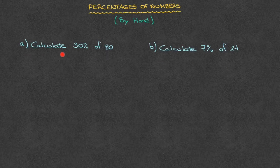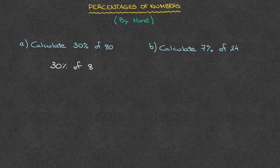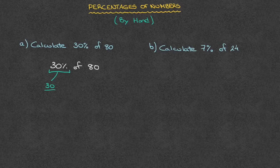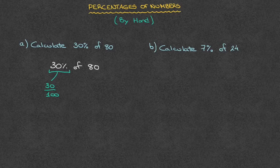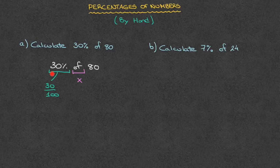First of all, we need to calculate 30% of 80. To calculate 30% of 80, there are two important things to realize. First of all, when we say 30%, that means 30 over 100 — another way of saying that would be 30 divided by 100. Secondly, the word 'of' in this context can be replaced by a multiplication sign. So when we say 30% of 80, it means 30 over 100 times 80.